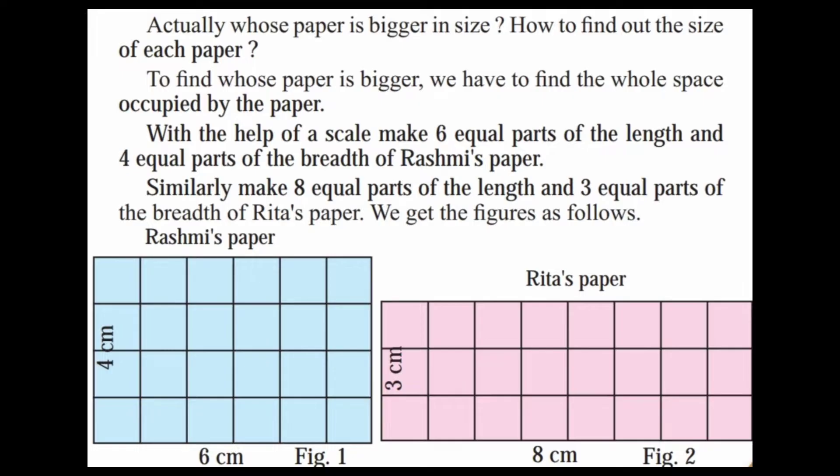How do we find out the size of each paper? Rashmi's paper has length 6 cm and breadth 4 cm. Rita's paper has length 8 cm and breadth 3 cm. With the help of a scale, make 6 equal parts of the length and 4 equal parts of the breadth of Rashmi's paper. Similarly, make 8 equal parts of length and 3 equal parts of breadth of Rita's paper. We get the figures as follows.